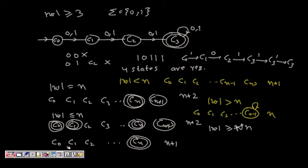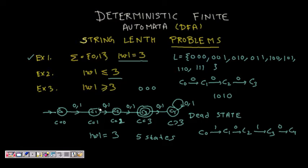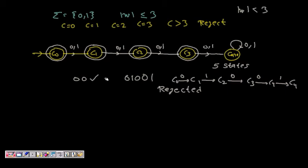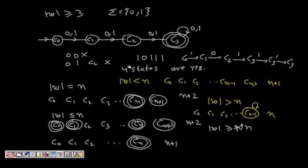I hope you understand this problem type where we are given the string length condition and have to design the DFA. One important thing to notice: in a DFA you must have transitions for all symbols in the alphabet at every state. Here, for each state we have transitions for both 0 and 1. I hope you enjoyed this lecture, thanks a lot.